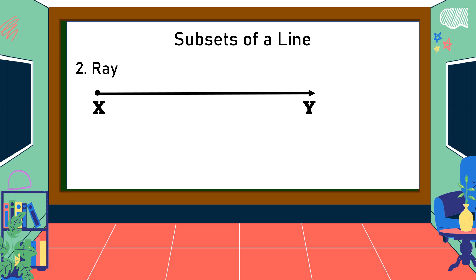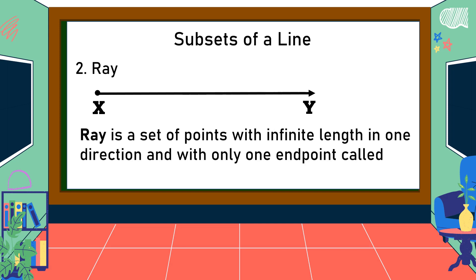What is a ray? Ray is a set of points with infinite length in one direction and with only one endpoint called the vertex.